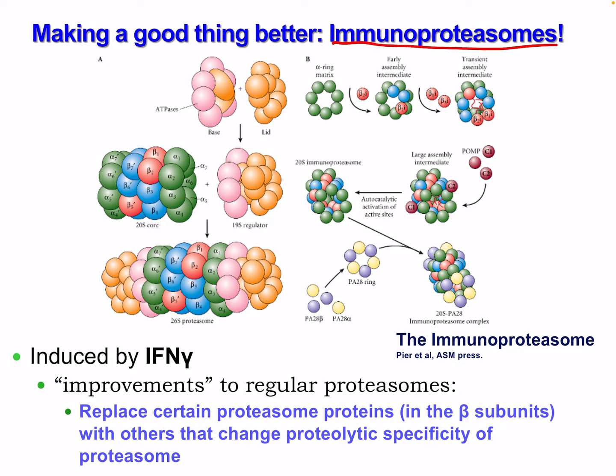The immunoproteasome — here's a more complex figure. This proteasome can be induced by interferon gamma, which we've discussed in innate immunity. Interferon gamma results in improvements to the regular proteasome — it helps replace certain proteasome proteins in the beta subunits, changing the proteolytic specificity of the proteasome.